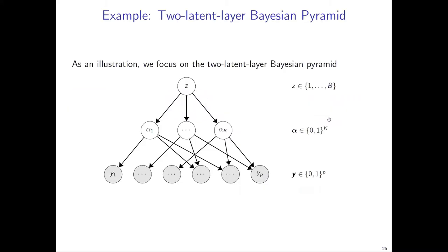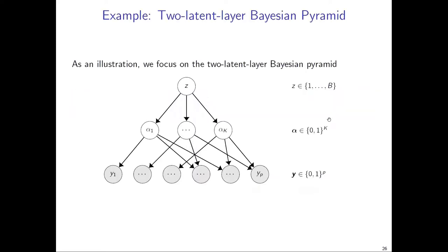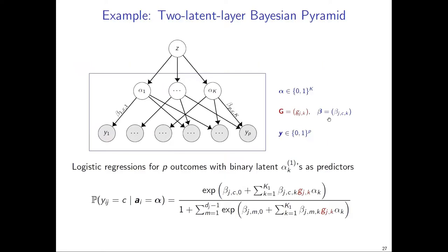Now I will discuss the methodology question of how to infer the latent structure. This part will be relatively brief and I will focus on a two-latent-layer example. In this two-latent-layer Bayesian pyramid, we specify the distribution of each Y_j given alpha as a multinomial logistic regression form. Note that for identifiability we allow for various different distributions, but for estimation we specify this particular form. The graphical matrix indices g_{j,k} play a role in the distribution — when alpha_k is not a parent of Y_j, g_{j,k} is zero and alpha_k does not play a role in the distribution of Y_j. For the deeper z and alpha layer, we adopt a latent class model.